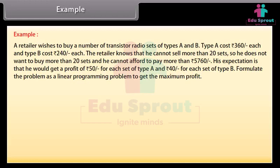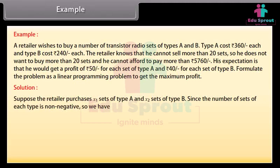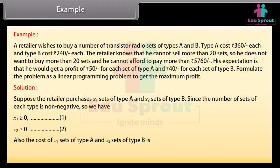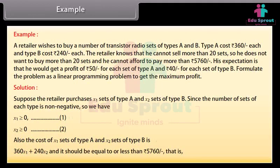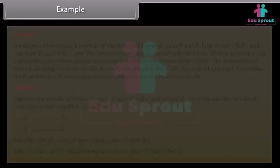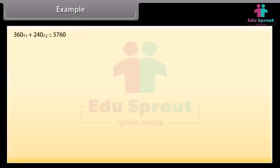Example: A retailer earns a profit of rupees 50 for each set of type A and rupees 40 for each set of type B. Formulate the problem as a linear programming problem to get the maximum profit. Solution: Suppose the retailer purchased X1 sets of type A and X2 sets of type B. Since the number of sets of each type is non-negative, so we have X1 greater than or equal to 0 (equation 1), X2 greater than or equal to 0 (equation 2). Also the cost of X1 sets of type A and X2 sets of type B is 360X1 plus 240X2, which should be less than or equal to rupees 5760. That is, 3X1 plus 2X2 is less than or equal to 48 (equation 3).